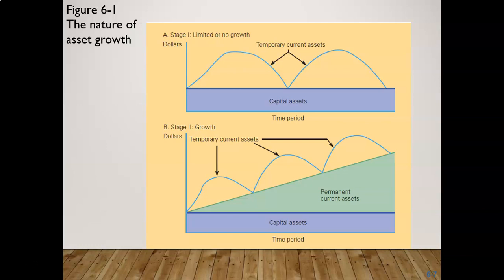Here's a picture that shows your current assets. At the top you can see temporary current assets going up and down, while capital assets remain relatively constant over a longer period. In stage two, you can see that temporary current assets go up and down, but there are also permanent current assets that grow over time. As the company grows, the permanent current assets grow — you will hold more cash and more inventory as the company grows.